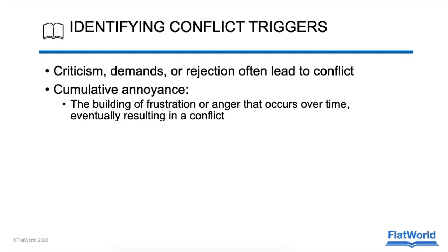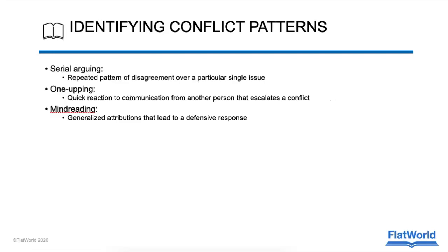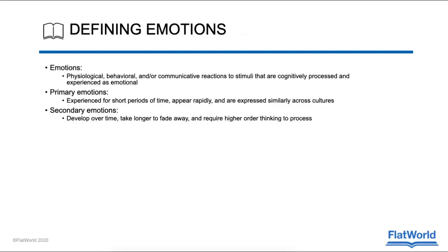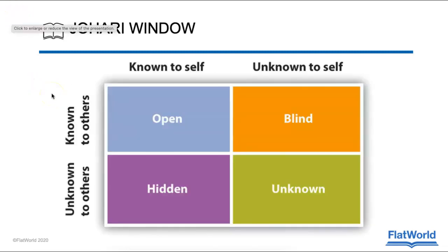Conflict triggers are talked about on page 181 — make sure you review those. Moving on to 5.3, we talk about primary and secondary emotions on page 185. That's critical for all of us to understand. We're moving on to theories of self-disclosure: what are you disclosing to others when you communicate? This window is super important — what are you open with in your communication and what are you hiding? Review that on page 192.